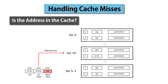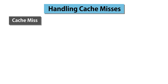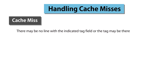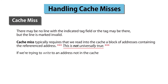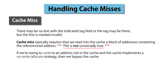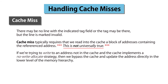But let's see what happens if the access check fails — that is, if the referenced address is not stored in the cache. This might happen because we look into the set and there is no line with the indicated tag field, or it might be that the tag is there but the line is marked invalid. In either case, we have a cache miss. A cache miss typically requires that we read into the cache a block of addresses containing the referenced address. Specifically, if we're trying to write to an address not in the cache and the cache implements a no-write-allocate strategy, then we bypass the cache and update the address directly in the lower level of the memory hierarchy.